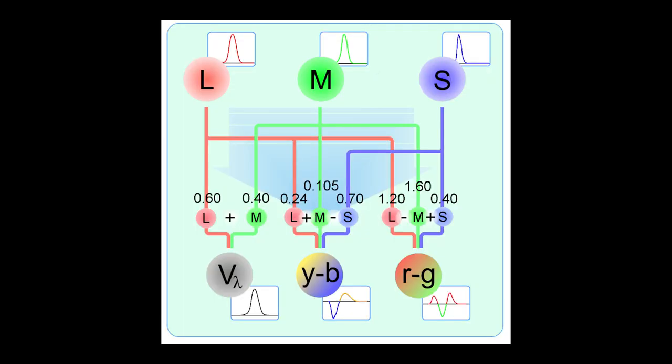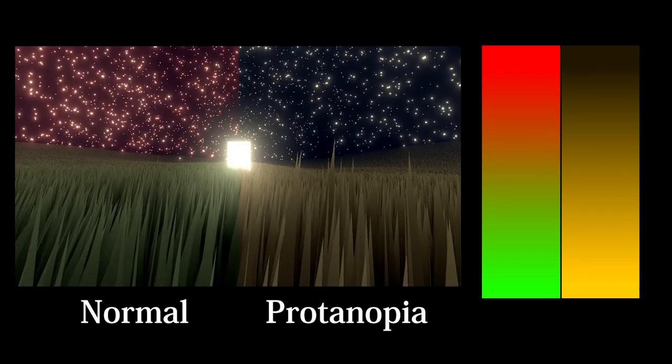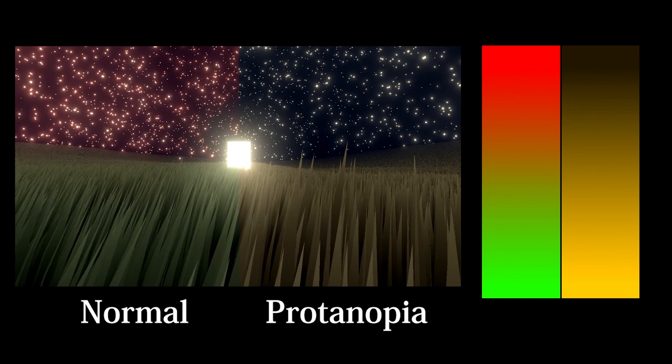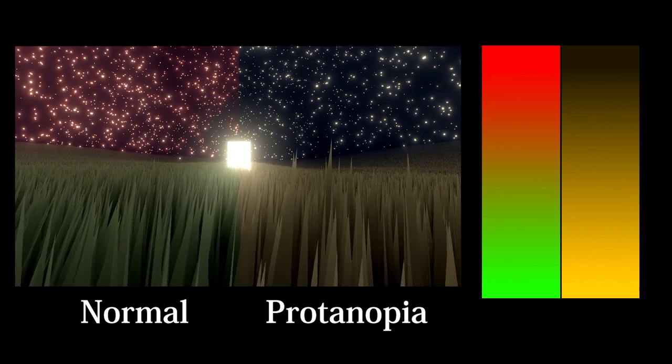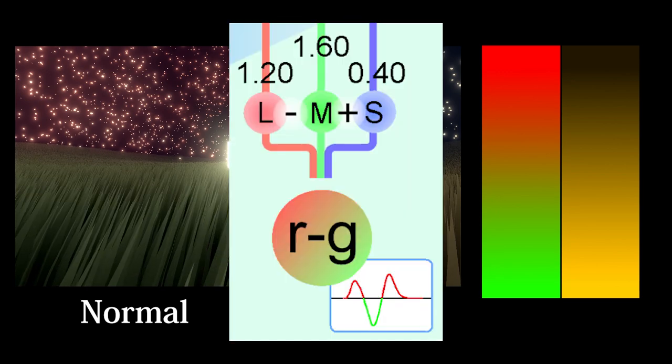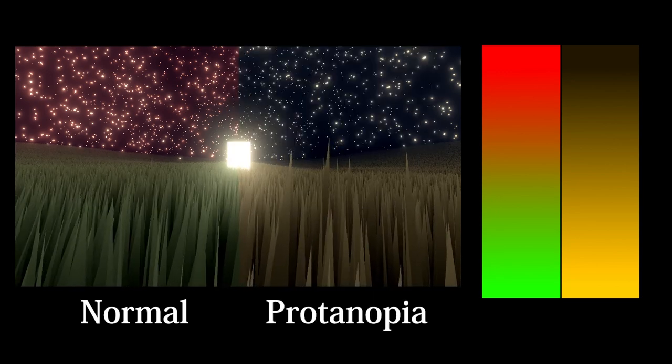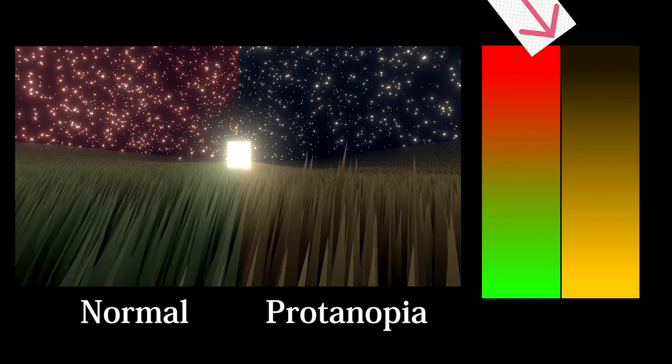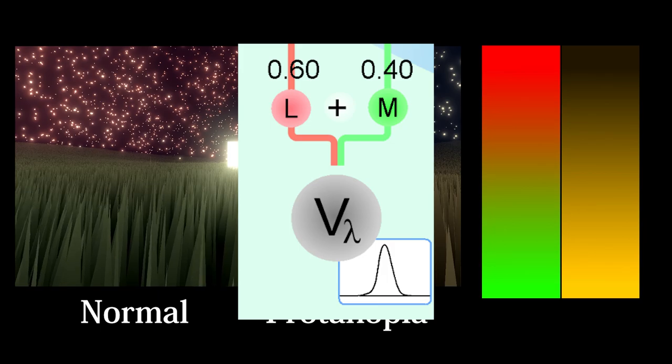The first type of colorblindness, protanomaly, is the malfunction of the L-cone. If the L-cone is entirely missing, it's called protanopia. This form of colorblindness is present in about 1% of the population and is a form of red-green colorblindness since it affects the red-green color opponent. Protanopia is unique in that those who have it also see colors as a little bit darker than others since the L-cone contributes the most to perceived brightness.